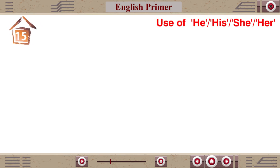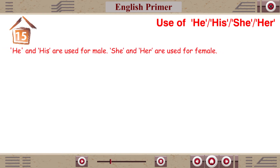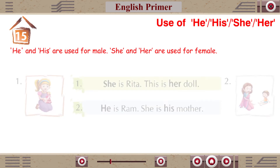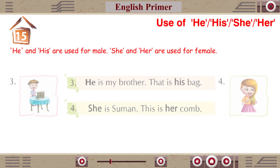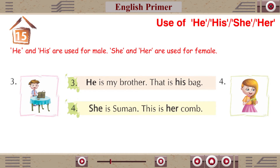Chapter 15: Use of He, His, She and Her. He and His are used for male. She and Her are used for female. She is Rita. This is her doll. He is Ram. She is his mother. He is my brother. That is his bag. She is Suman. This is her comb.